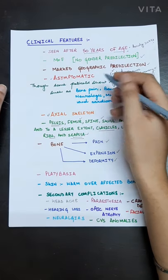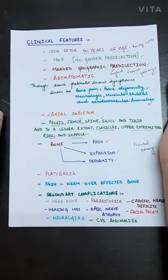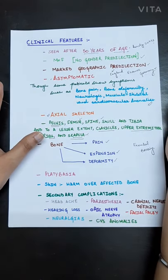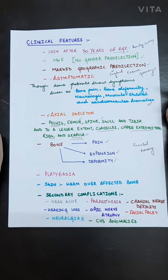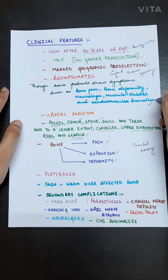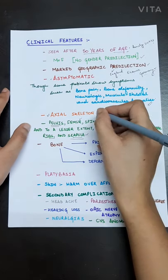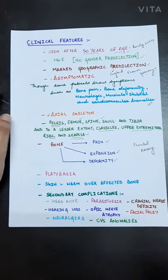The disease is basically asymptomatic though some patients show symptoms such as bone pain, bone deformity will obviously be there, neurological, musculoskeletal and cardiovascular anomalies will be there. The disease affects axial skeletal more than the appendicular skeletal.